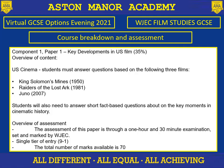I'm just going to take you through the course breakdown and the assessment for the GCSE. Paper one looks at key developments in film and US film, so we take a close look at Hollywood and the origins of film. The three films we watch for this are King Solomon's Mines and Raiders of the Lost Ark — two really big American action films from different eras. We compare those two films and look at how film has developed from the 1950s to the 1980s.